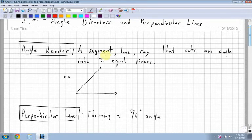The first one, angle bisector, is a segment, line, or ray that cuts an angle into two equal pieces. A segment, remember, is just a small line with two endpoints. A line doesn't have any endpoints. And a ray is like these parts of the angle where it has an endpoint and then keeps on going in one direction forever. So, it's one of those three things that cuts an angle into two equal pieces.